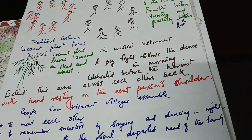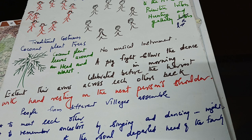Students are learning with a different perspective, whatever they are interested in. Suppose they want to sing about a particular topic, let them sing and write lyrics. If they are fond of writing narrations, let them write. For example, about Andaman and Nicobar Islands, they can write a brochure — 'Come and see the Nicobar Islands or come and participate in the Pig Festival' — and narrate what will take place, how it will take place.